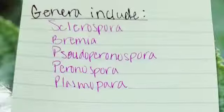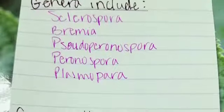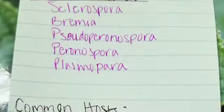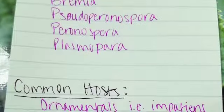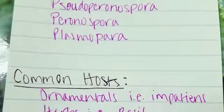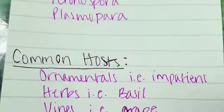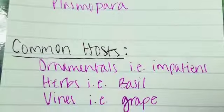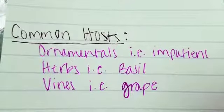Tell me more. Downy mildew is caused by several different genera of Oomycetes, but the more common two that infect ornamentals belong to either the genus Peronospora or Plasmapara. The species will depend on the host.